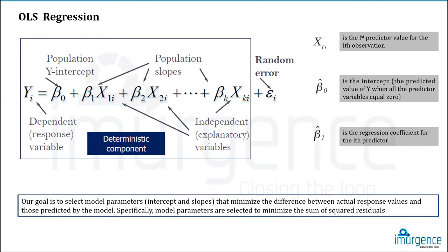An OLS regression — ordinary least squares — follows the concept of ordinary least squares estimates. The equation is: Yi = β0 + β1·X1i + β2·X2i + ... + βk·Xki + εi, where εi is a random error. β0 is the Y-intercept — the static value where the regression line cuts the Y-axis. β1, β2, through βk are called slopes, describing the ratio of change in Y relative to change in X.